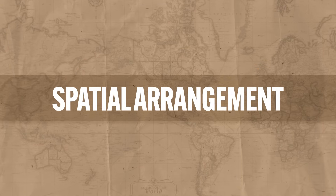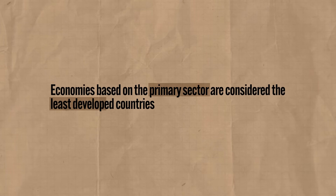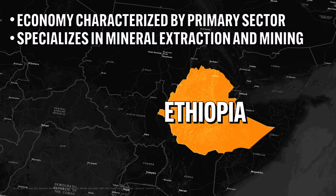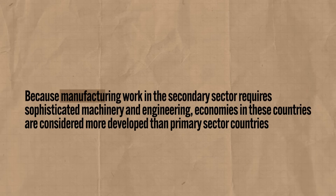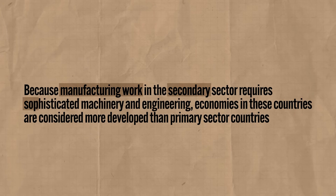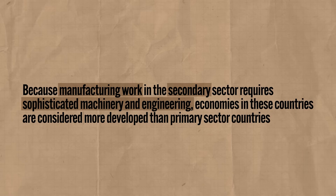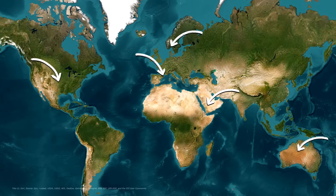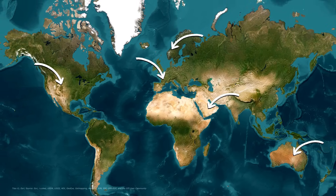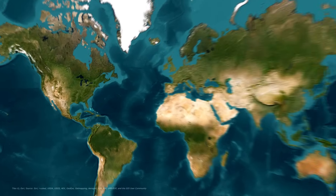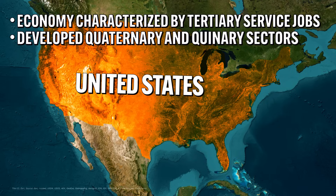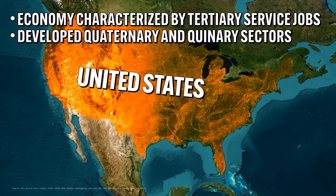Now let's see how those sectors are spread around the world. Economies based on the primary sector are considered the least developed countries — for example, the primary sector largely characterizes the Ethiopian economy, which specializes in mineral extraction and mining. Manufacturing work in the secondary sector requires sophisticated machinery and engineering, so those economies are considered more developed. Relatively few countries have developed tertiary, quaternary, and quinary sectors, but those that have are considered the most developed — like the United States, whose economy is largely made up of tertiary service jobs, with quaternary and quinary sectors among the most influential in the world.